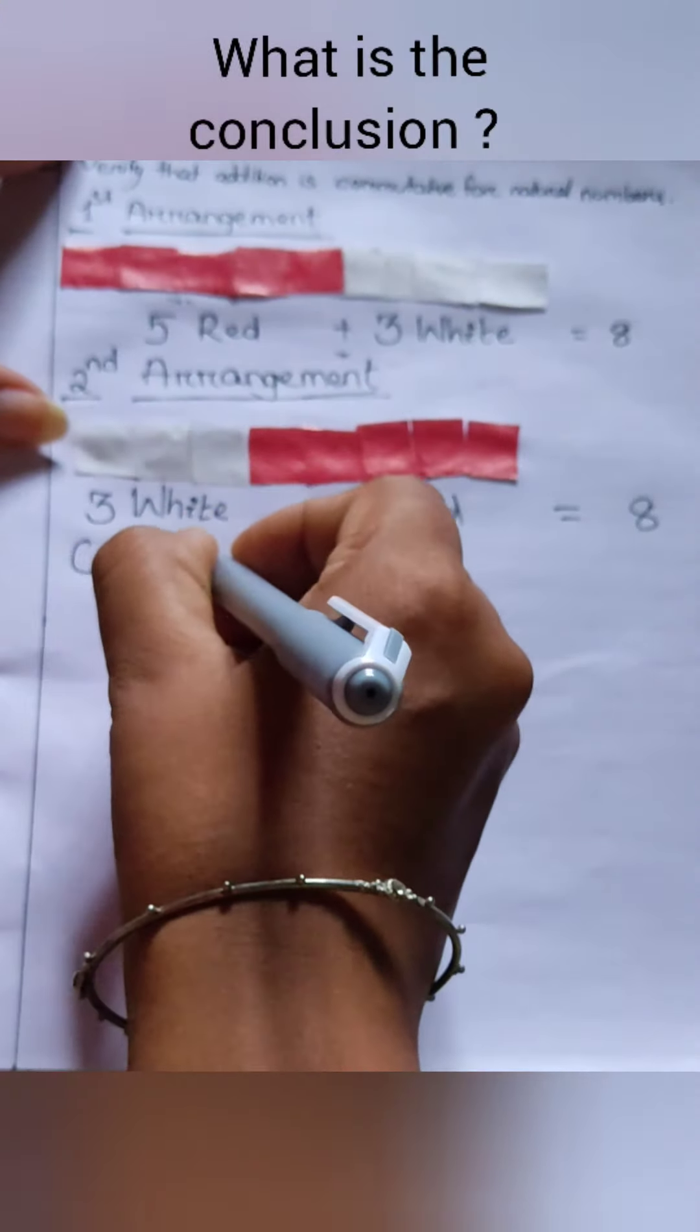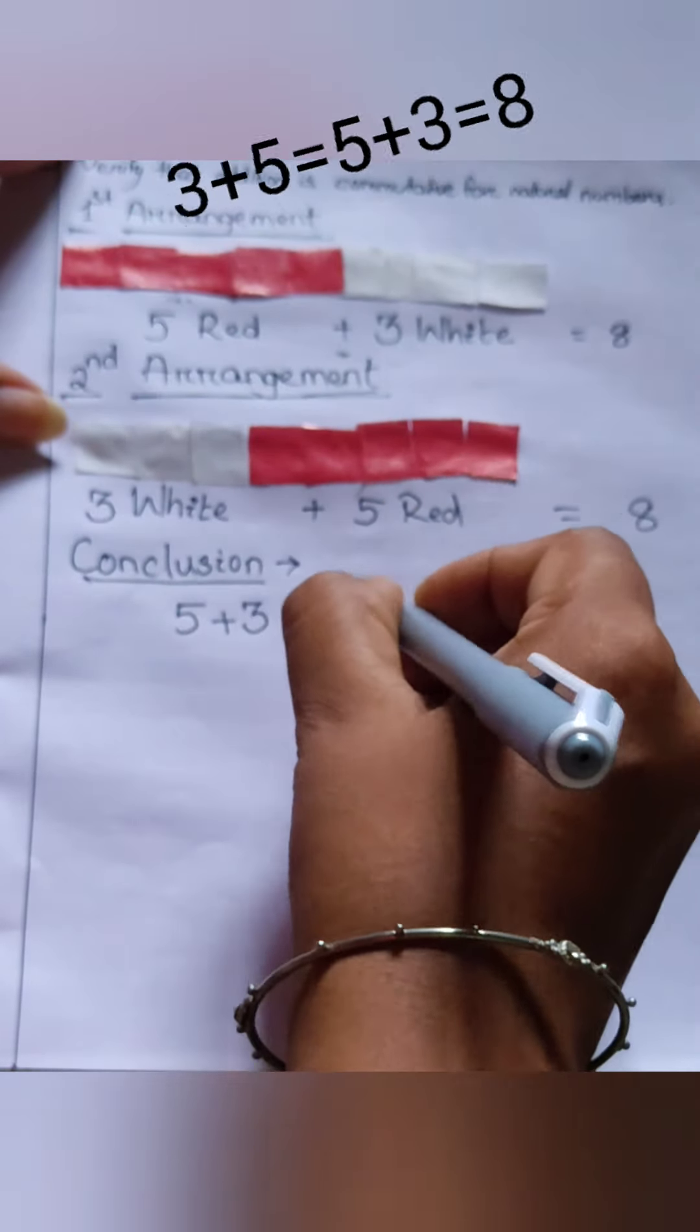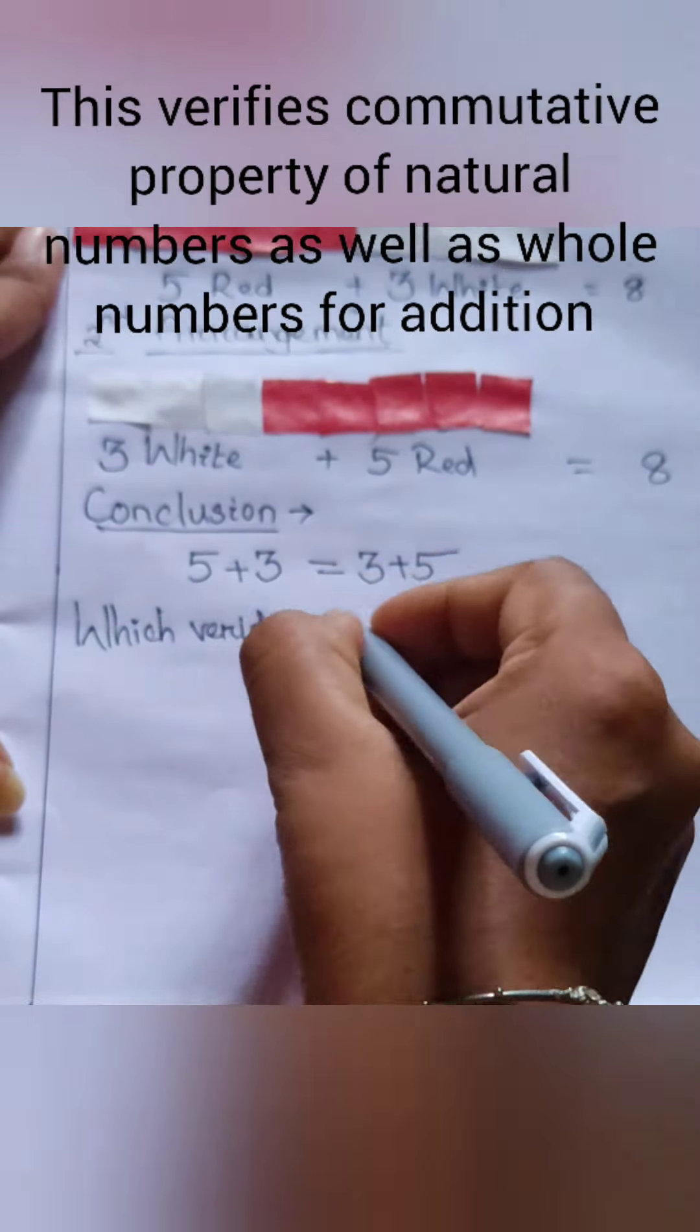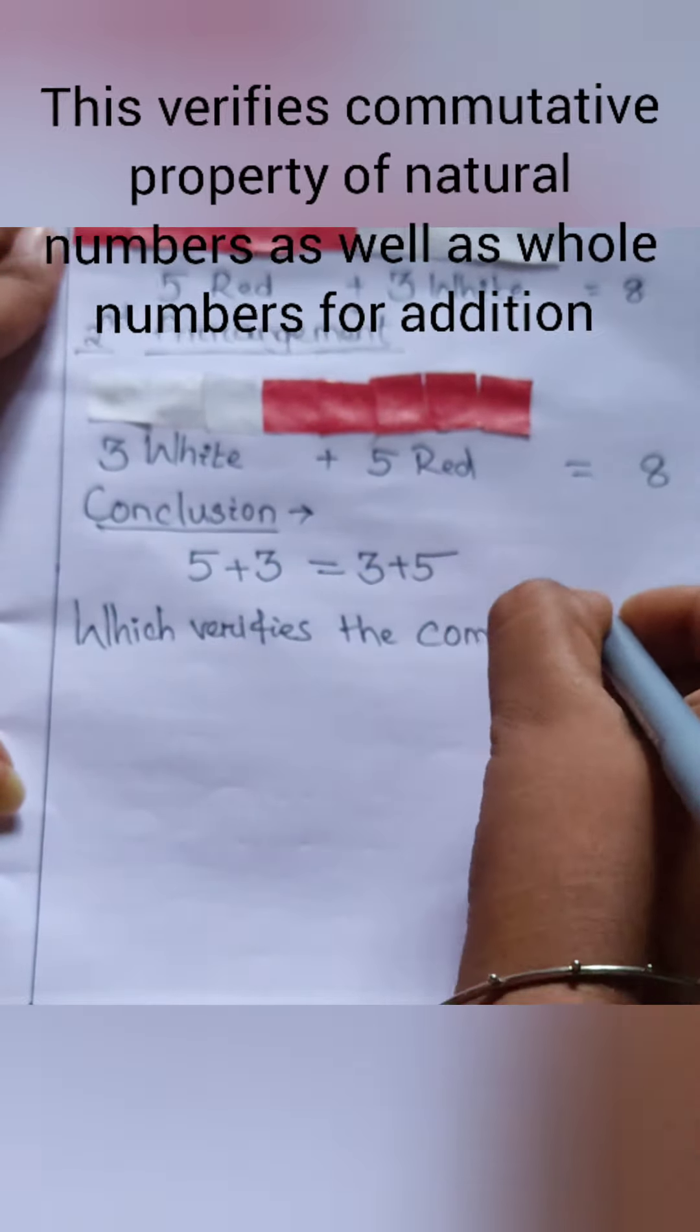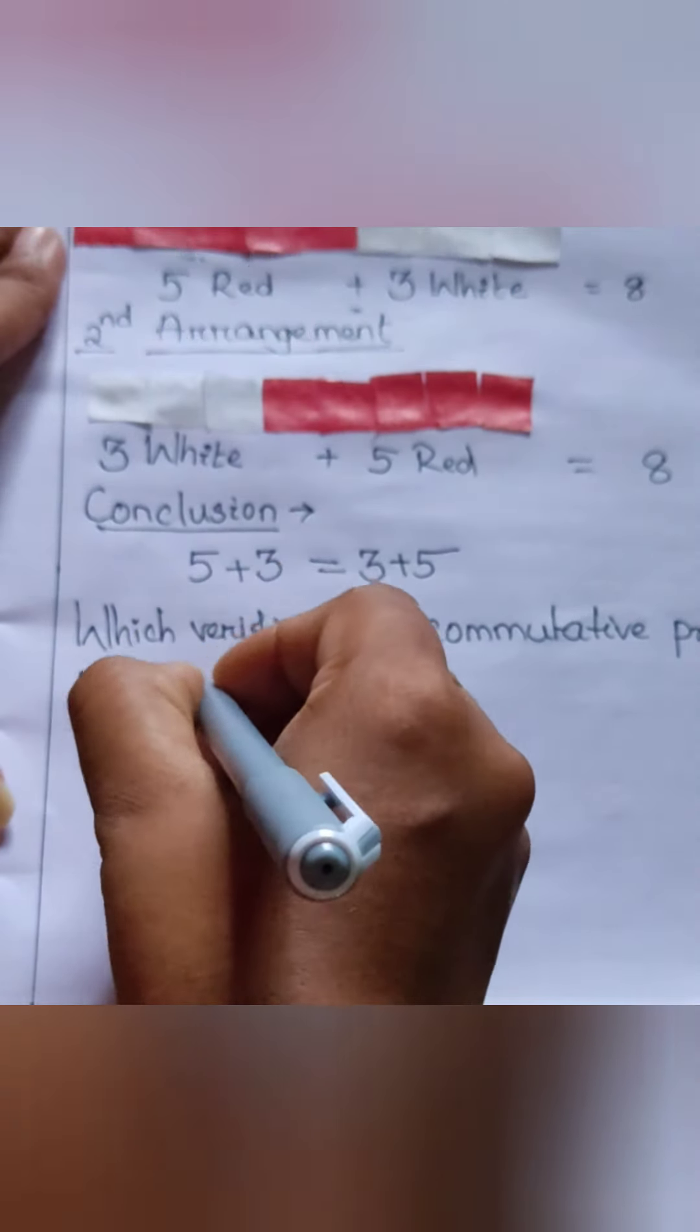So what do we come to know? What's the conclusion? That 3 + 5 is equal to 5 + 3, which equals 8. It means it verifies the commutative property of natural numbers as well as whole numbers for addition.